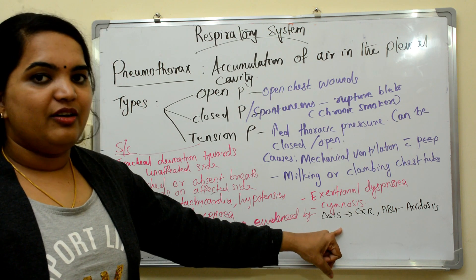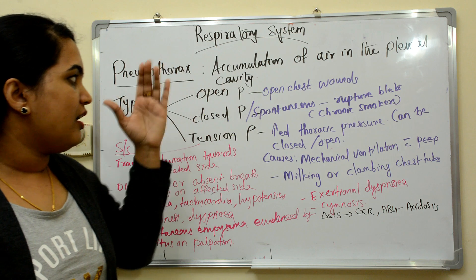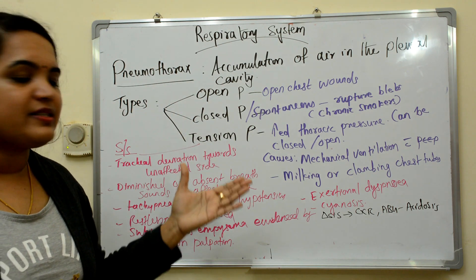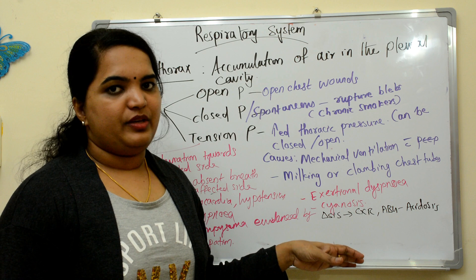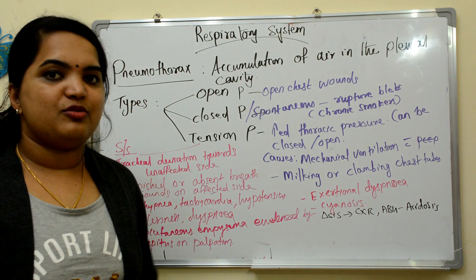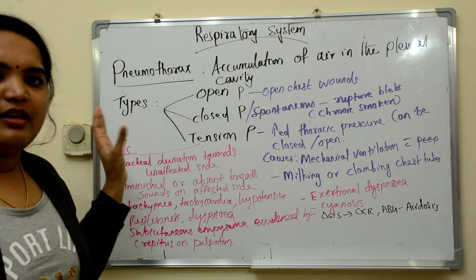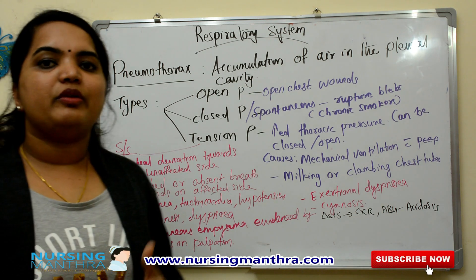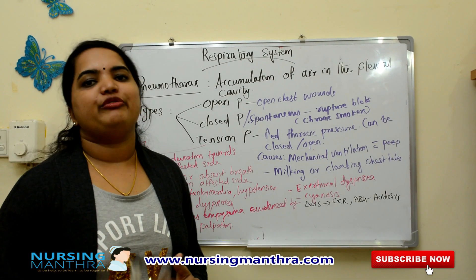The diagnosis used to confirm pneumothorax is chest X-ray and ABG. In ABG, we can mainly observe respiratory acidosis. This covers pneumothorax, and next we will move through the management.